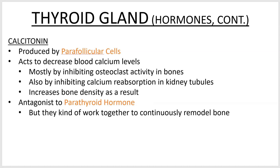An additional effect of calcitonin is that it slightly inhibits calcium reabsorption by the kidneys, so you're going to urinate more calcium. Calcitonin and parathyroid hormone are antagonists, but at the same time they work together to remodel your bones.